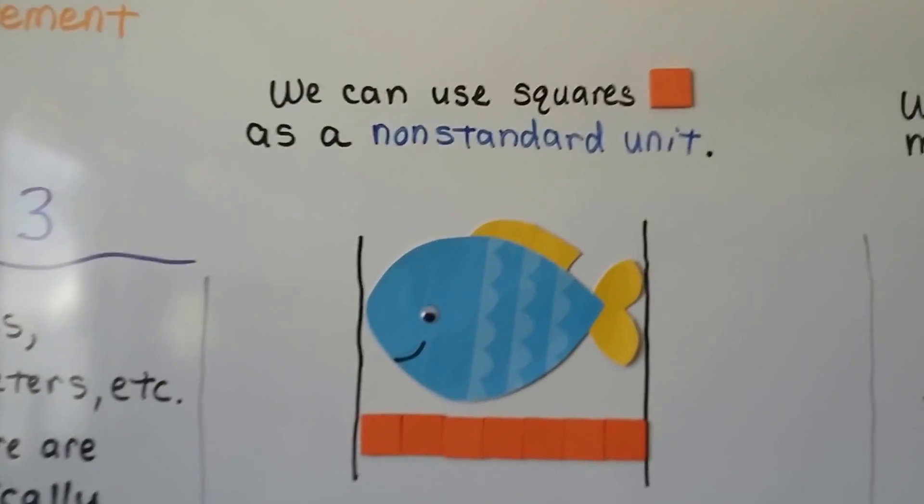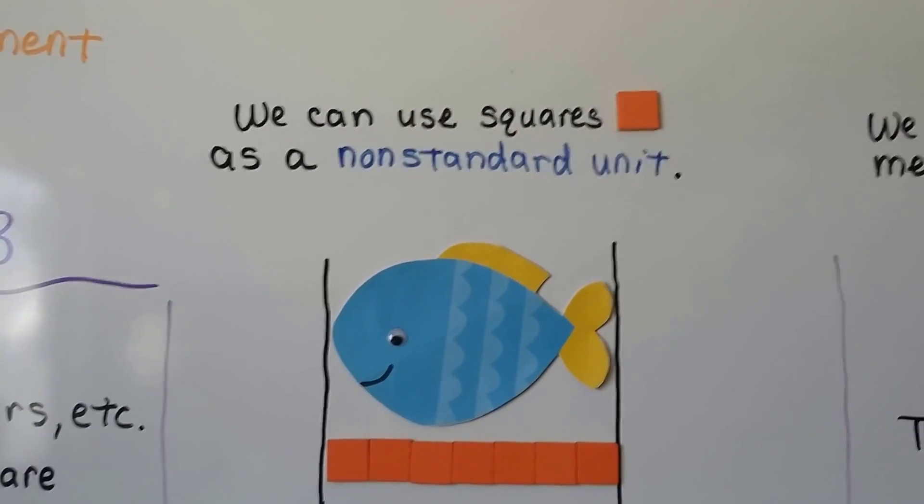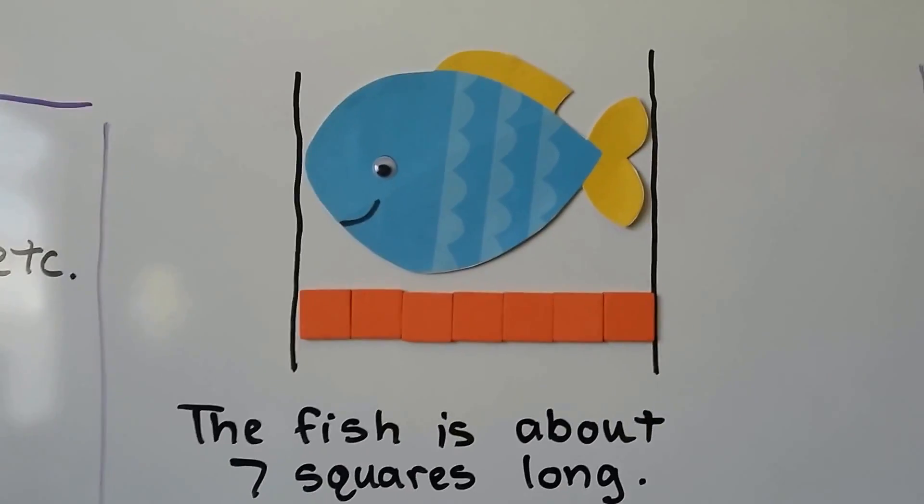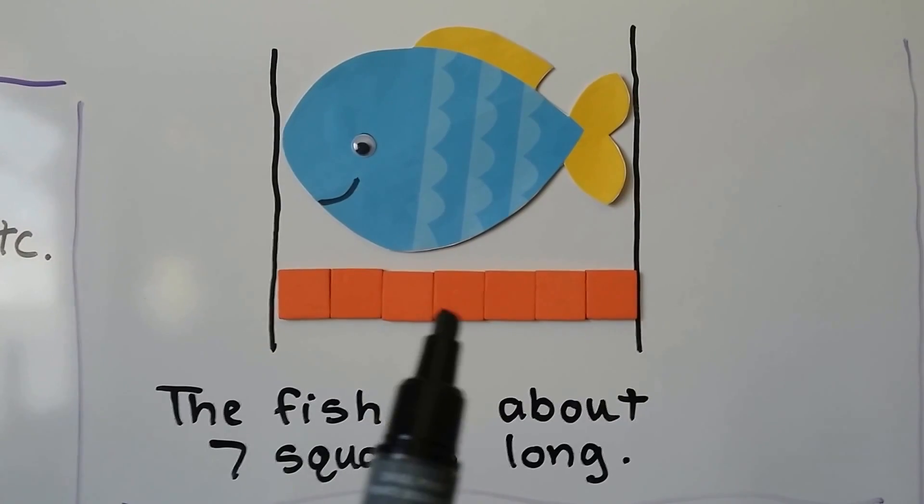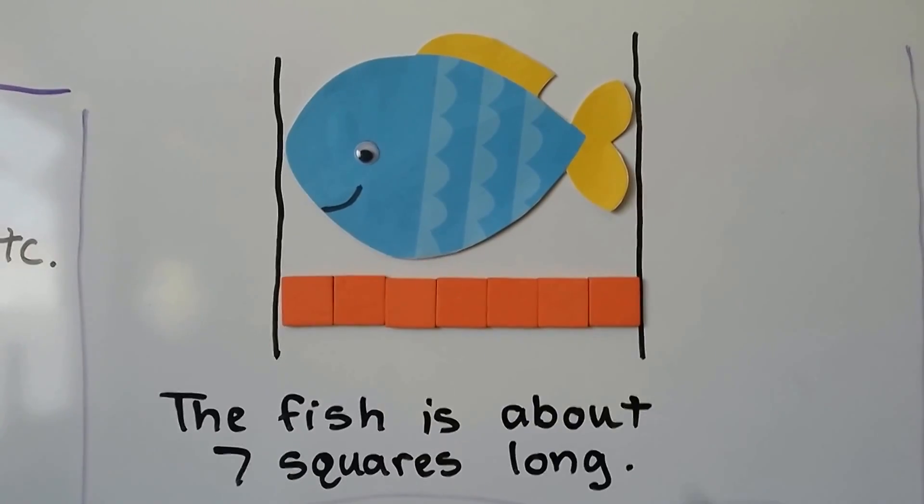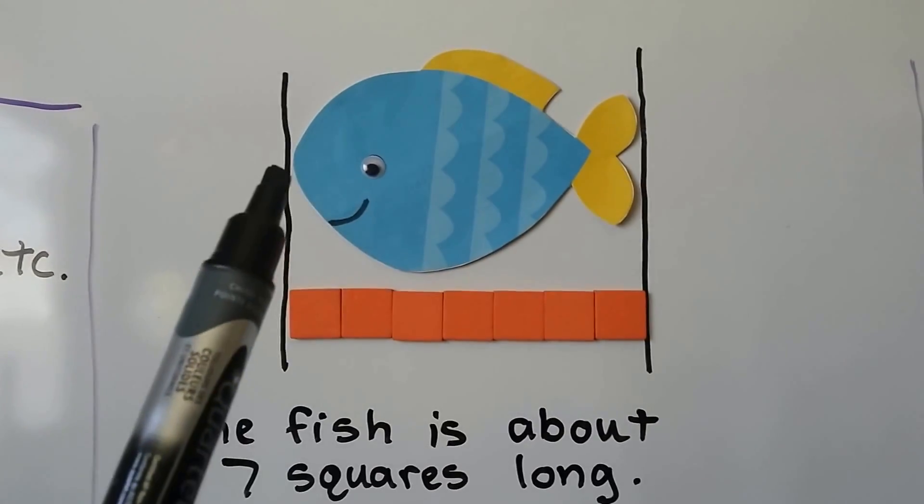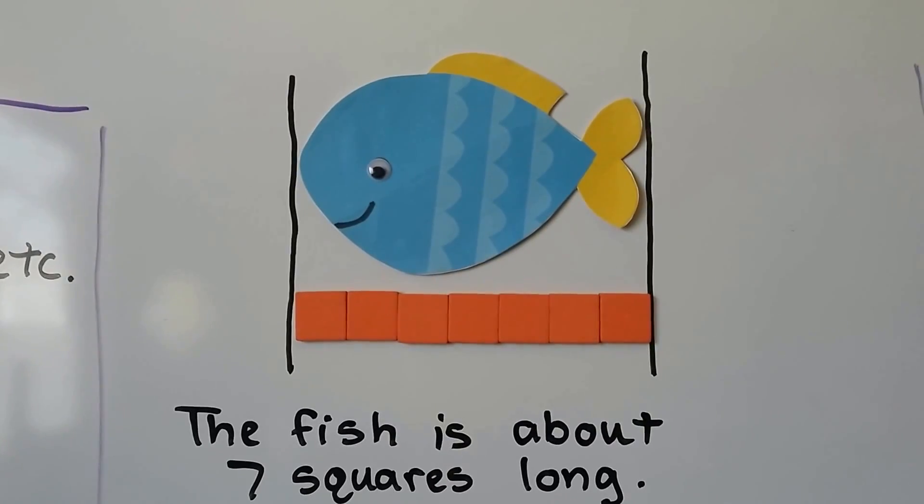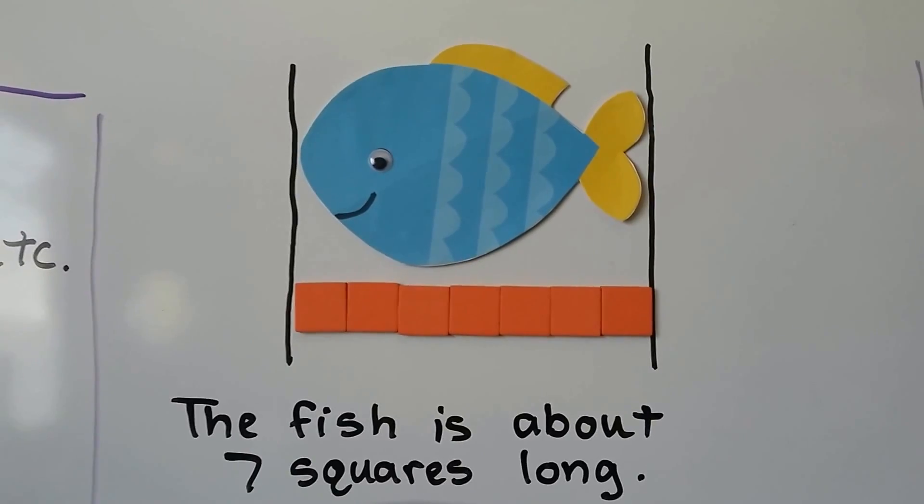We can use squares as a non-standard unit. This fish is about seven squares long. One, two, three, four, five, six, seven. From the tip of its face to its tail, it's about seven squares long. It's not exact, so we say about.